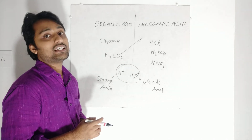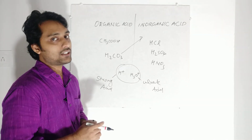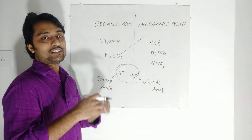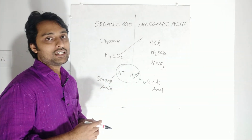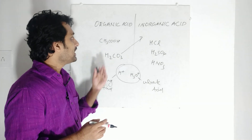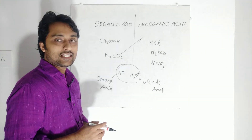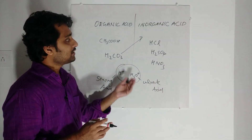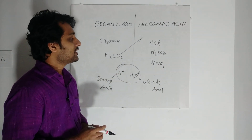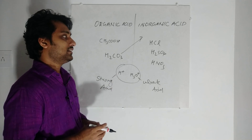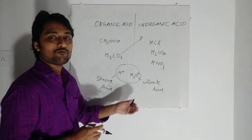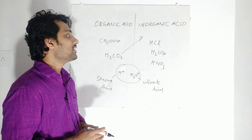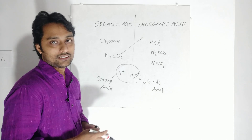Organic acids are usually weak acids — because they are edible and we consume them. So organic acids are weak acids. Most inorganic acids are strong acids — hydrochloric acid, sulphuric acid, nitric acid, etc. These are strong acids. So this is the difference between organic and inorganic acid.